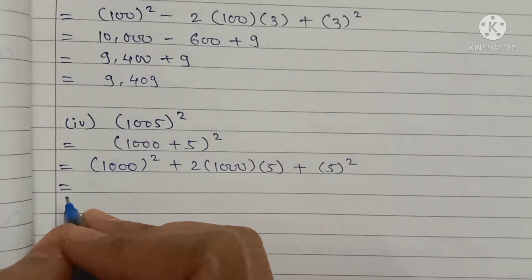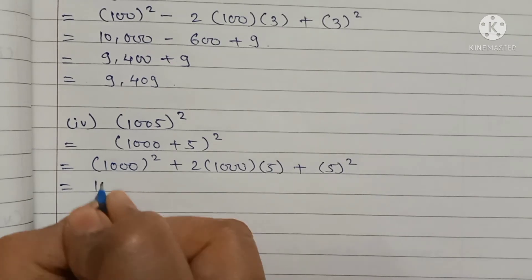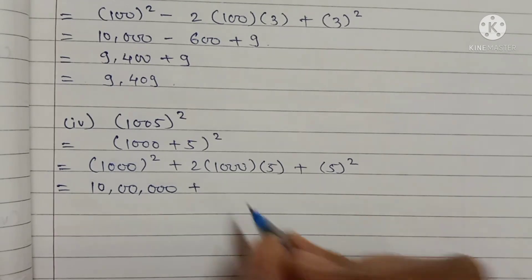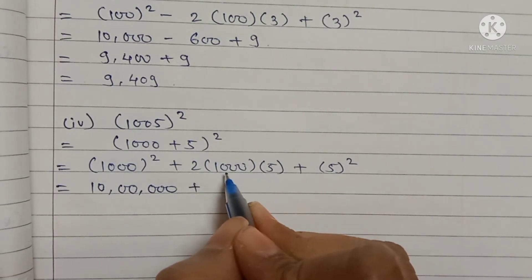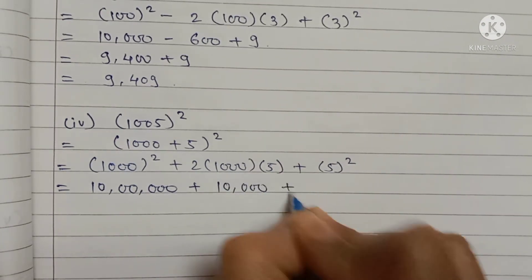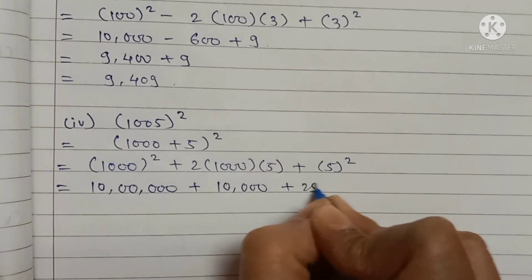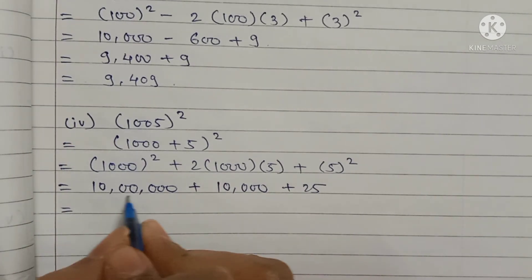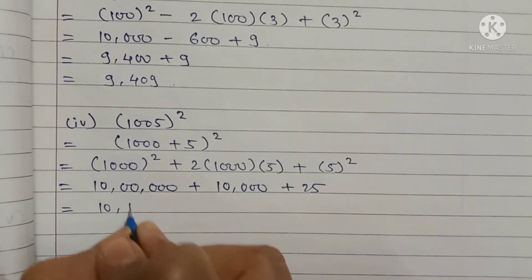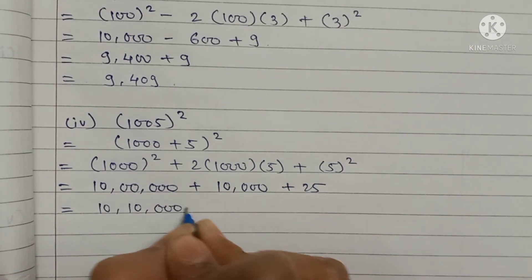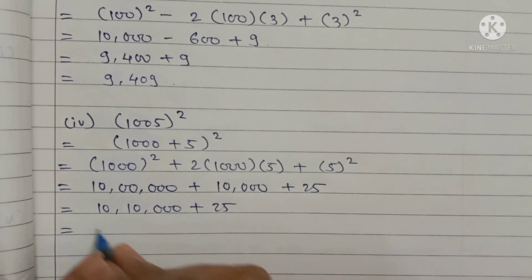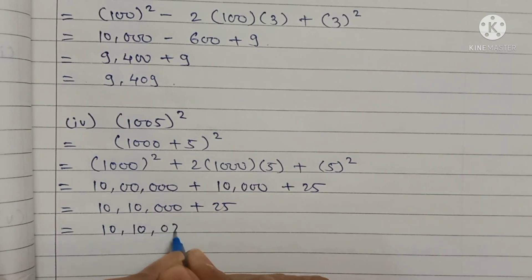1000 square is 10 lakh, plus 10 into 1000 means 10,000, plus 5 square is 25. Now 10 lakh plus 10,000 means 10,10,000 plus 25. The answer is 10,10,025.